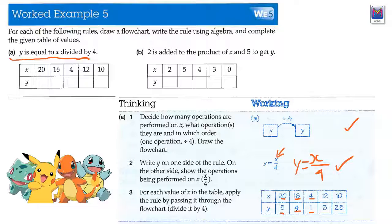Same with the next one. 2 is added to the product of x and 5 to get y. So, we're going to have y equals. But if we look at our other variable, the product of x and 5 - product means times. So that's 5 times x, which we write as that. And 2 is added plus 2. 5x plus 2.